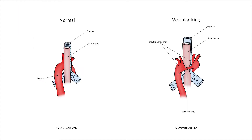In a patient with normal anatomy of the aorta, trachea, and esophagus, the aorta is going to sit anterior to the trachea, which is going to sit anterior to the esophagus. However, one classic anomaly in vascular rings is the double aortic arch. In this case, there is a vascular connection between the aorta which essentially causes straddling of the trachea and esophagus, leading to stridor.